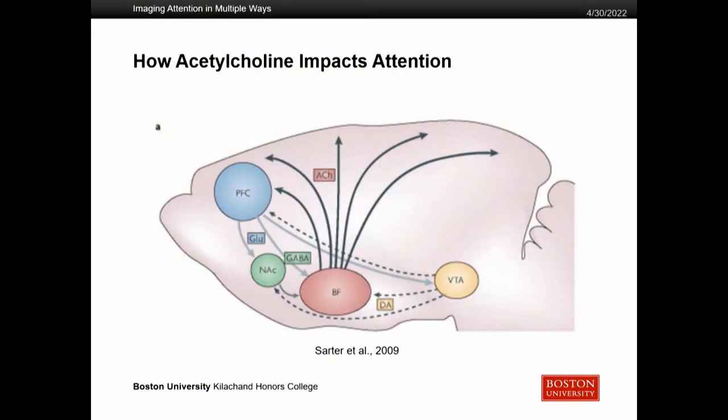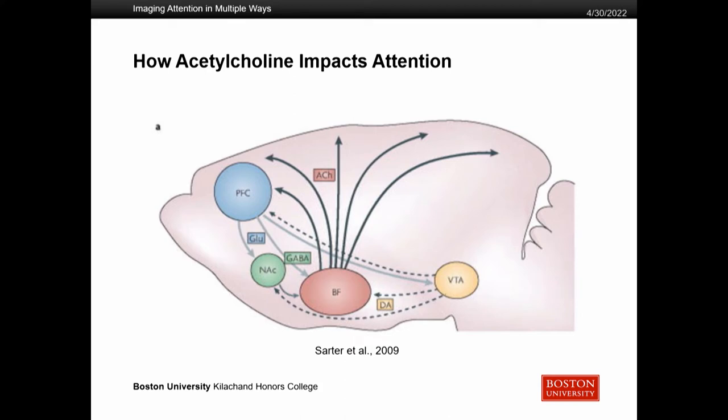Specifically, when we talk about attention, we're talking about neurotransmitters, and the neurotransmitter that is most important for attention is acetylcholine. Don't be afraid by this map — basically what I want to talk about is if you look at the red circle here that says BF, that is where acetylcholine is produced, in basically a model of a rat brain. In the BF, or the basal forebrain, acetylcholine projects throughout the brain to different areas associated with attention, such as your hippocampus for memory or your prefrontal cortex for executive thinking.